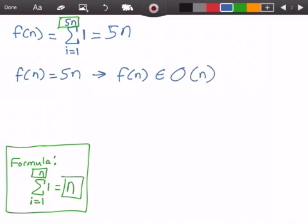Now why is that? Well, because 5 times n belongs to Big O of n. But why is that? Well, recall that when we use Big O notation, we drop constants and low-order terms. And so that's exactly what we did here. We dropped our constant and we just get n.